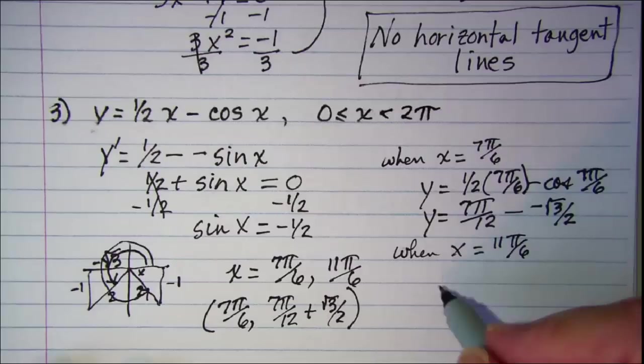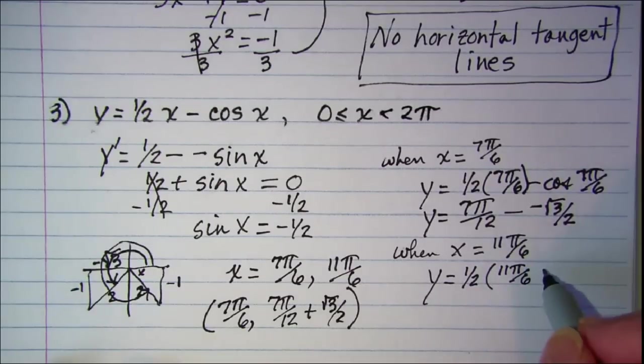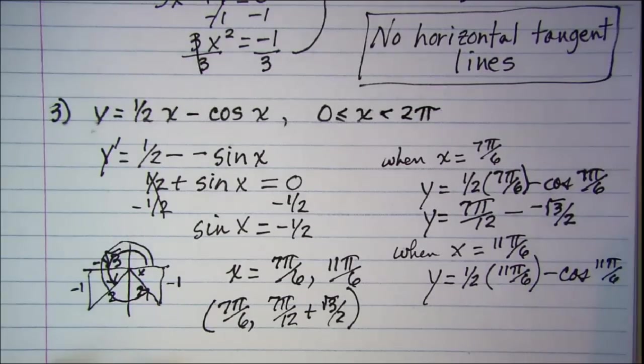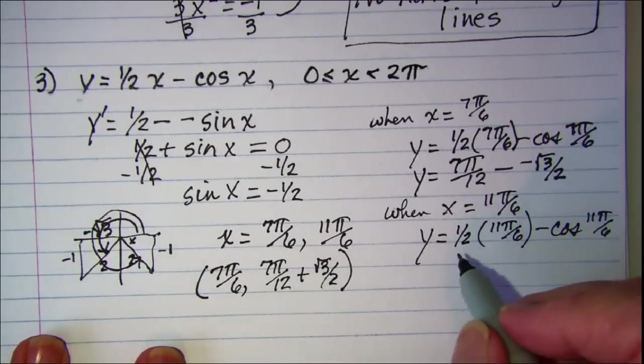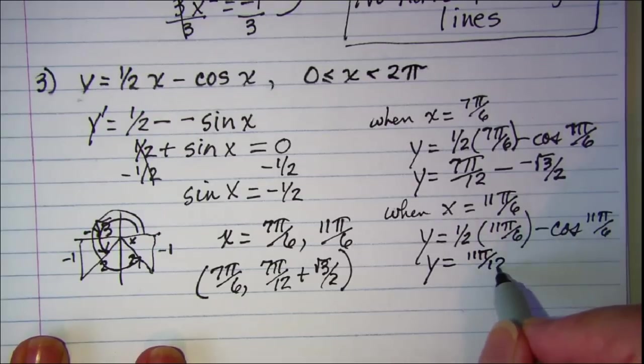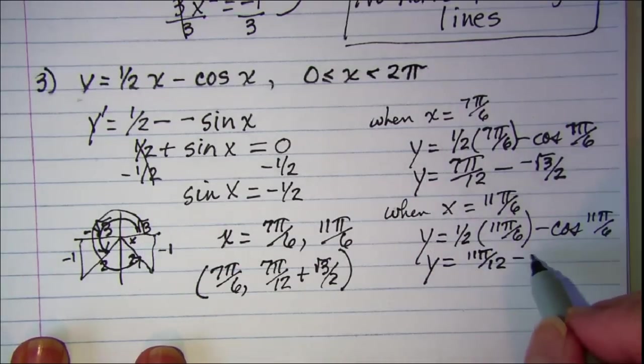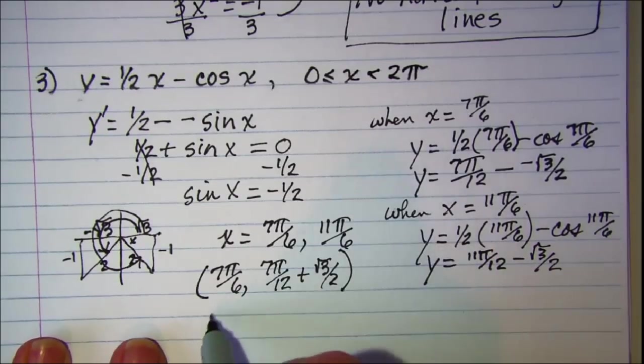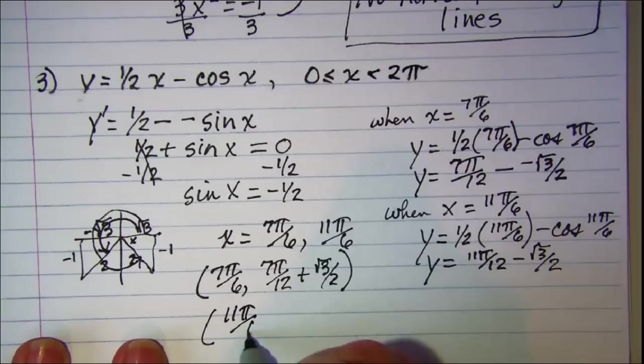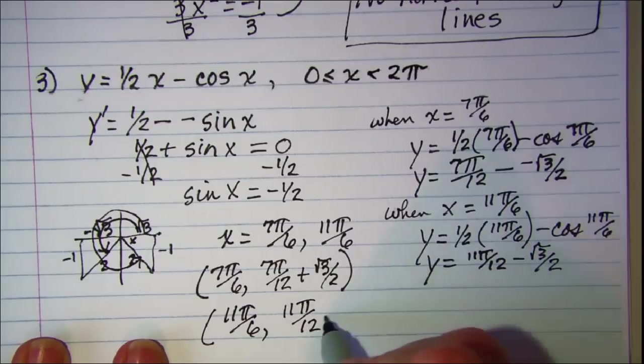So y equals 1 half of 11 pi over 6 minus the cosine of 11 pi over 6. So y is 11 pi over 12 minus and the cosine here is root 3 over 2, so my other point is 11 pi over 6 and 11 pi over 12 minus root 3 over 2.